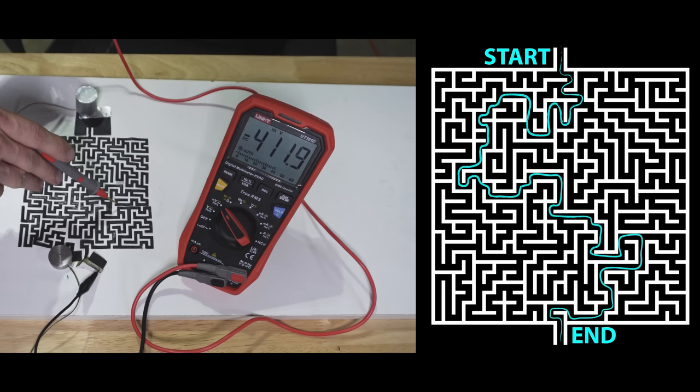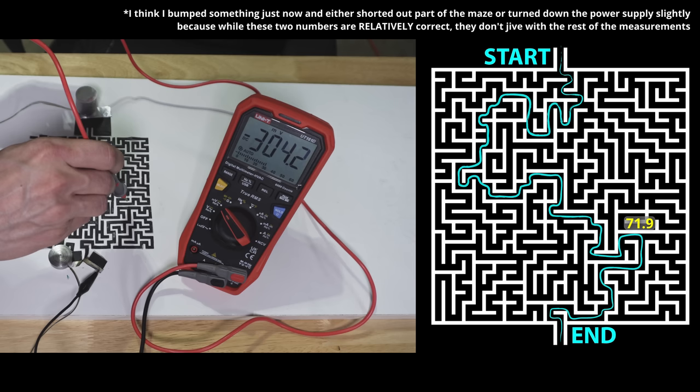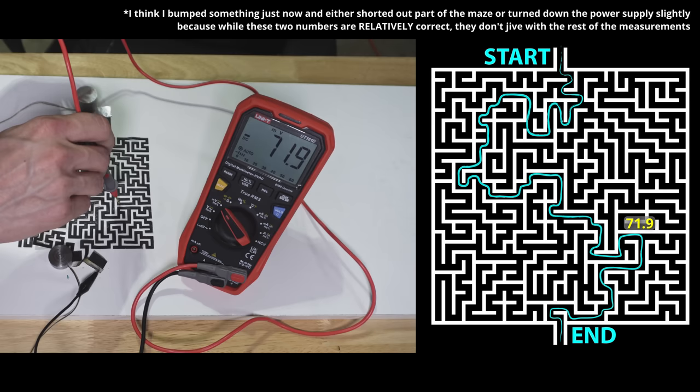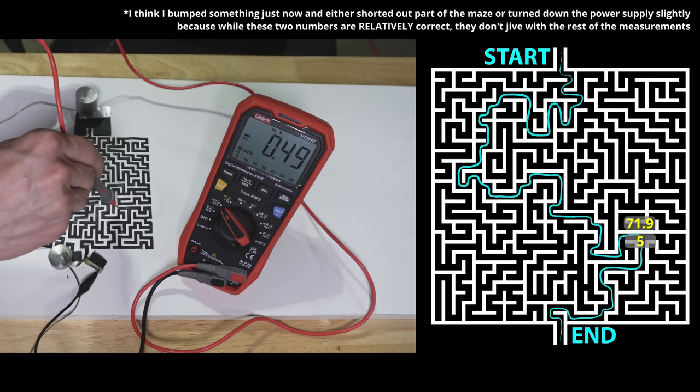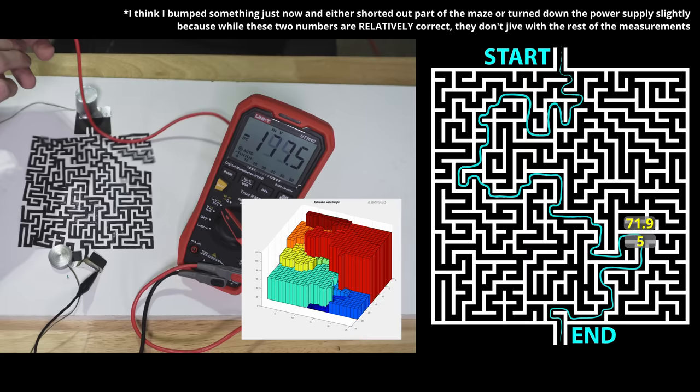And over here, let's look at the big difference, because I think this was the border between the very tall water and the very short water in the maze, in the water maze. So here, we're at minus 71. And here it should be a lot shallower. Minus five. There we go. It's all the same.